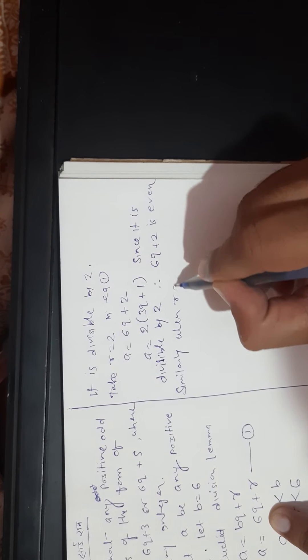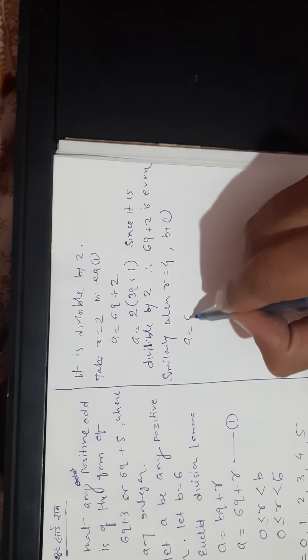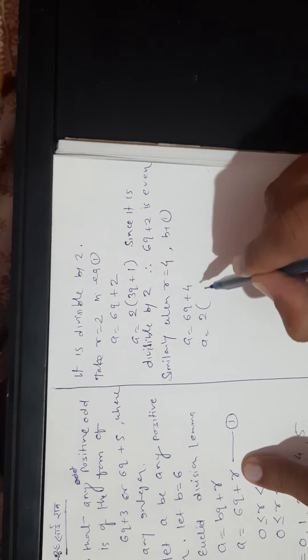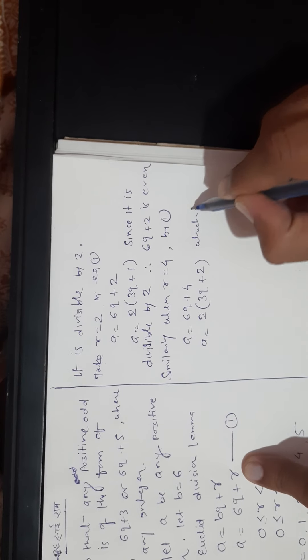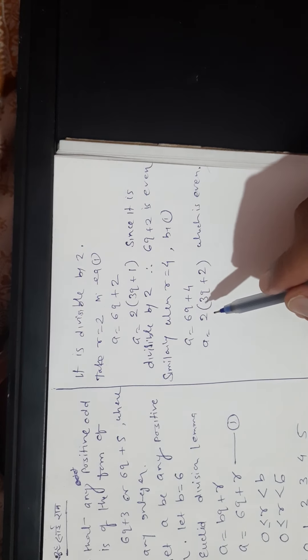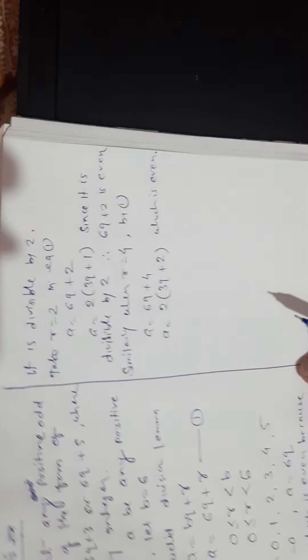Similarly, when we put r equal to 4, we get a equal to 6q+4. Taking out common: 2(3q+2), which is even because it is divisible by 2. So in these three cases — 6q, 6q+2, and 6q+4 — the numbers are all even.